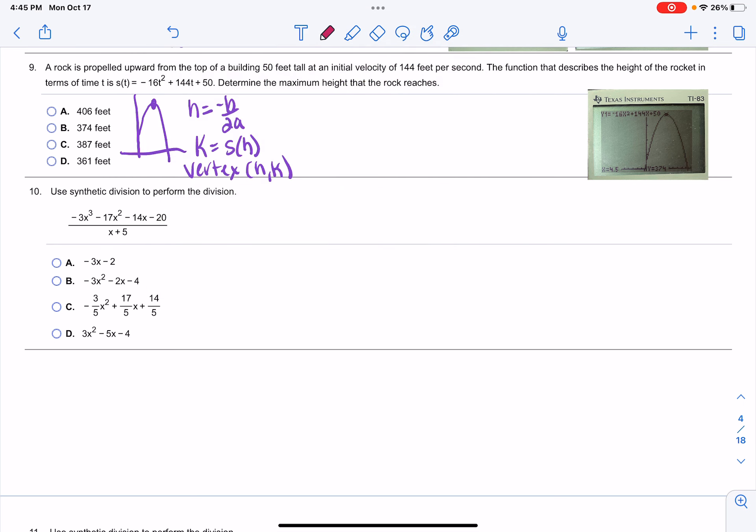So using a equals negative 16, b equals 144, and c equals 50, we're going to find h, which is negative b over 2a, or negative 144 divided by 2 times negative 16. That gives us 4.5. So 4.5 represents the time when it reaches its maximum height.